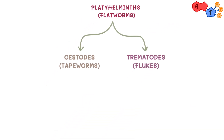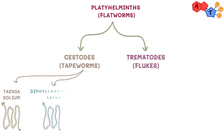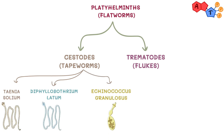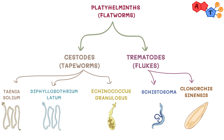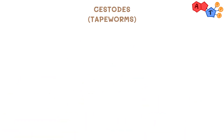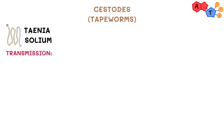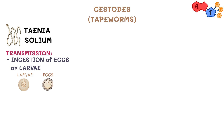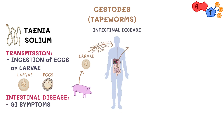Going back to our classification, under the first category we have cestodes, or tapeworms. We will talk about Taenia solium, Diphyllobothrium latum, and Echinococcus granulosus. Taenia solium is usually transmitted to humans from consumption of either larvae or eggs. Ingestion of larvae can lead to intestinal disease, and this usually comes from eating undercooked pork, leading to GI symptoms such as nausea and abdominal pain.